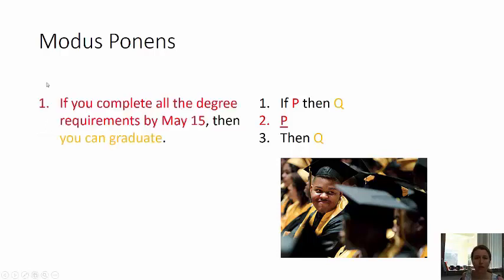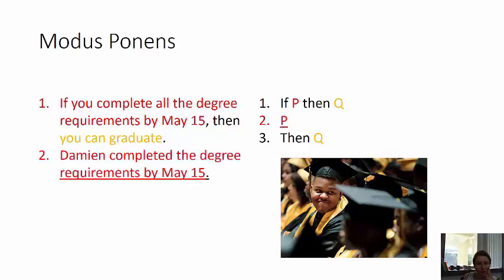Here's an example. If P — if you complete all the degree requirements by May 15th — then Q — then you can graduate. This is something that might be written in the college catalog handbook. Then I affirm P: Damian completed the degree requirements by May 15th. Therefore, what can you infer? Damian is going to graduate.